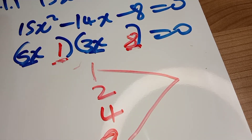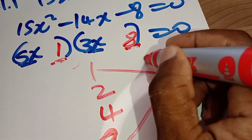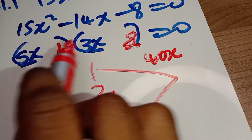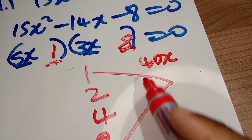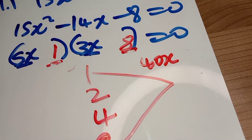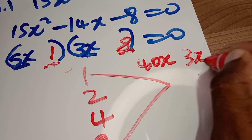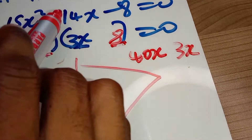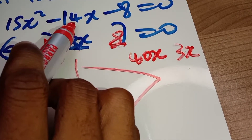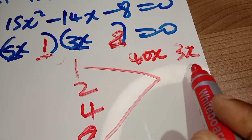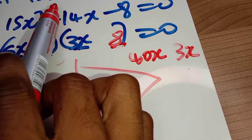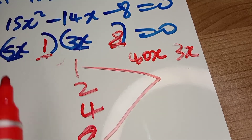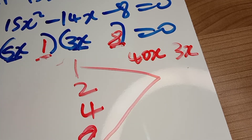5x multiplying the 8 gives us 40x, and this one is going to multiply the 3x giving us 3x. You can see that 40x subtract 3x cannot give us negative 14x. Even 40x plus 3x cannot give us negative 14x. So eight is a bad idea as a factor choice here.